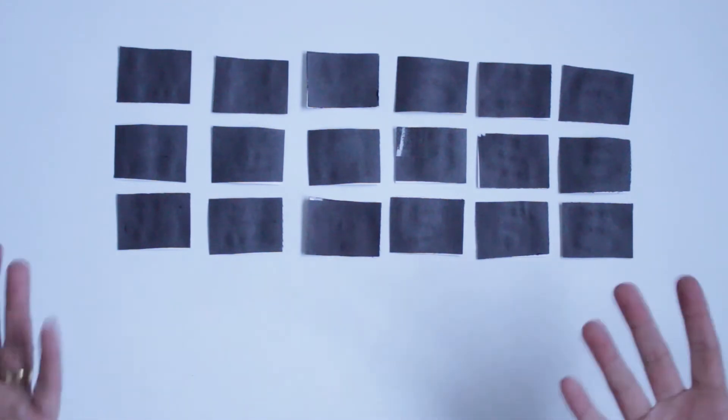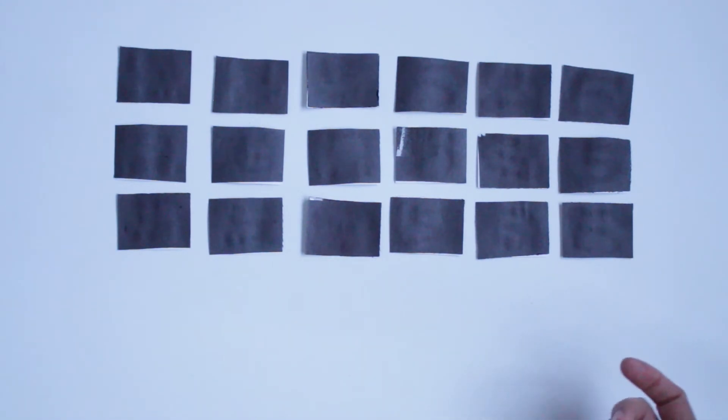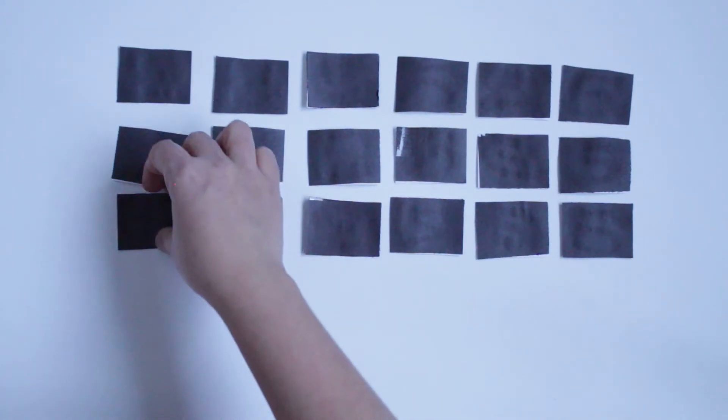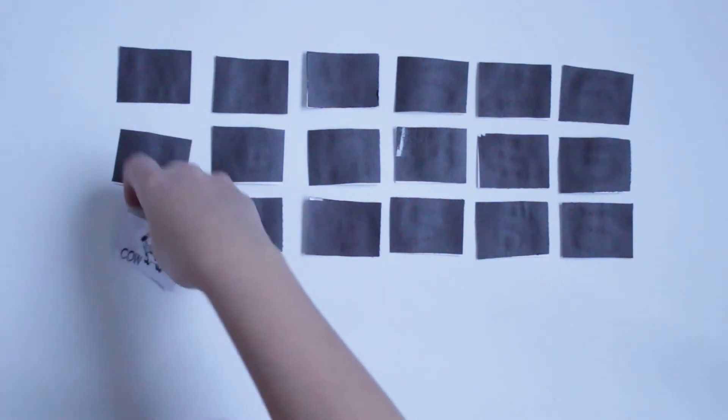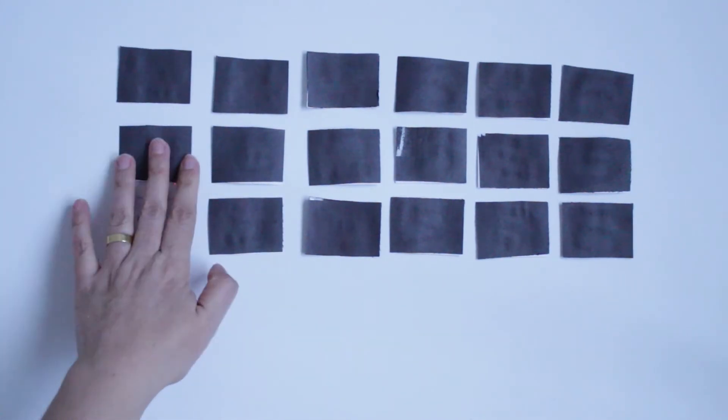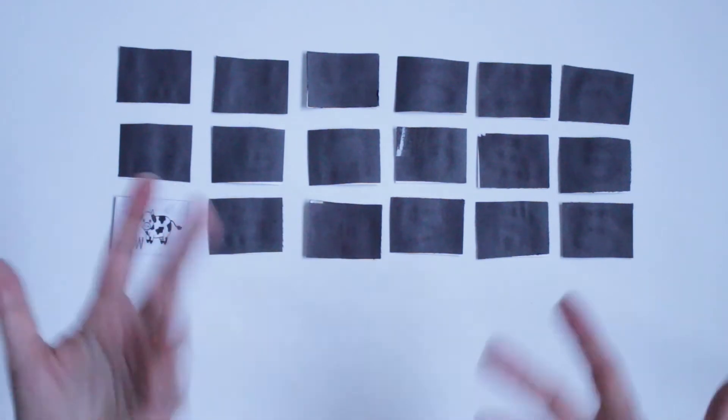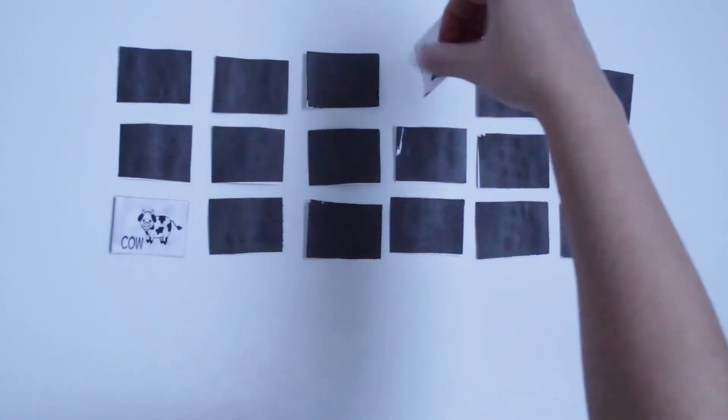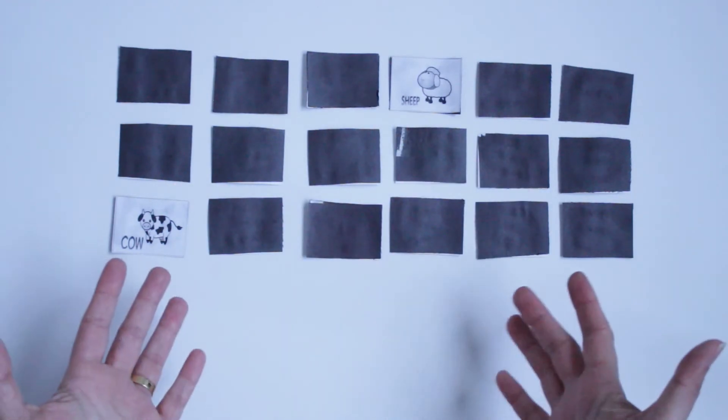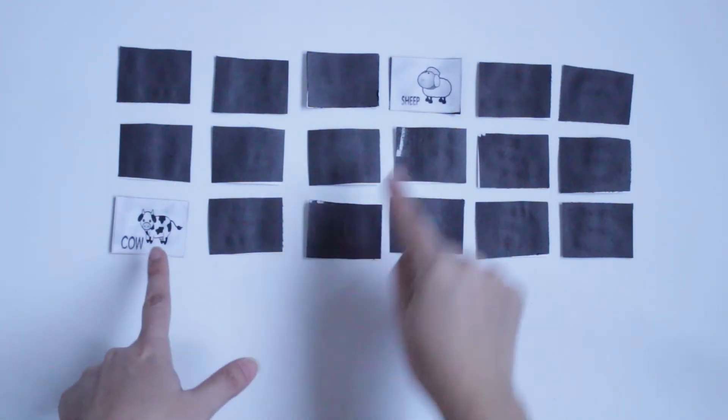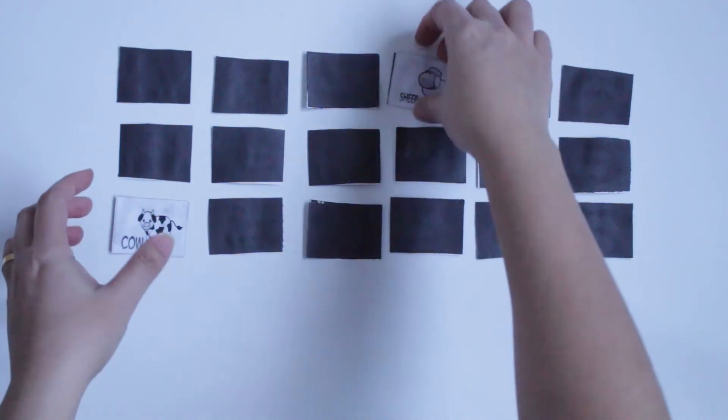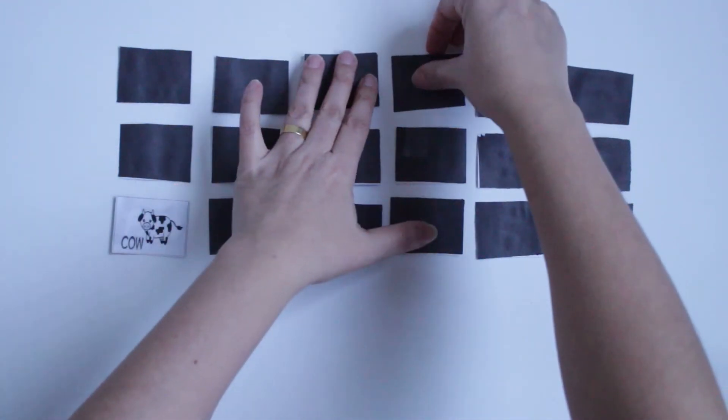The game is a memory game. You ask the kid to turn one card and tell you what it is - cow - and then they can choose one more. If they turn cards and they are different, then they turn them off again.